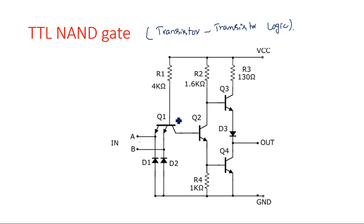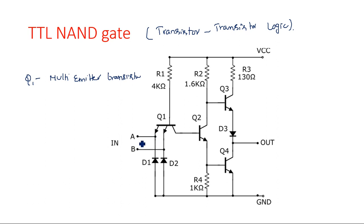Now let us see the circuit construction. There are four transistors: Q1, Q2, Q3, and Q4. Out of these, transistor Q1 is a multi-emitter transistor, meaning it has more than one emitter. The number of emitters equals the number of inputs. Since this is a two-input NAND gate, Q1 has two emitters, with both inputs connected to these emitters.